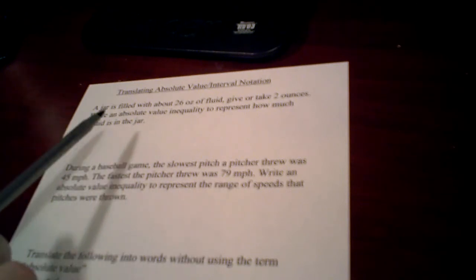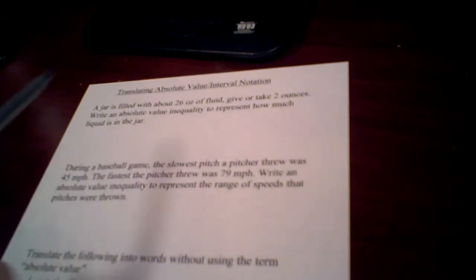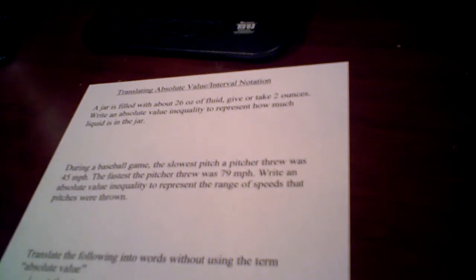Here's the first one. A jar is filled with about 26 ounces of fluid, give or take 2 ounces. Write an absolute value inequality to represent how much liquid is in the jar. So they give you an amount that basically it should be, which is this 26 ounces of fluid. So it's the distance away from that, so it's the distance x is away from 26.